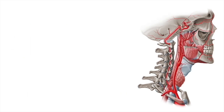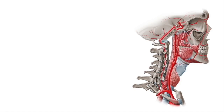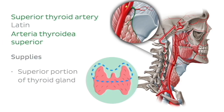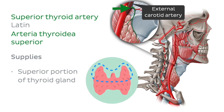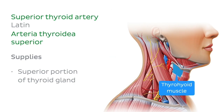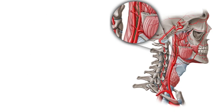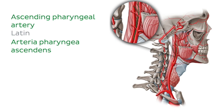The first branch of the external carotid artery is the superior thyroid artery. This artery's main target is the superior portion of the thyroid gland. It arises from the anterior surface of the external carotid artery and descends along the lateral border of the thyrohyoid muscle to reach the thyroid gland.